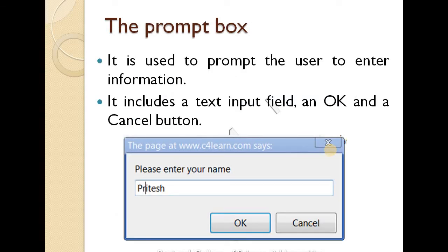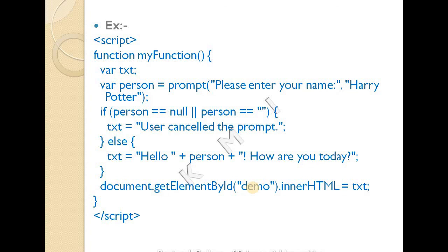The prompt box allows the user to enter information in a text area. It has both an OK and Cancel button. Using the prompt box, the user can type in their input — for example, entering their name — and that input is captured by the JavaScript code.